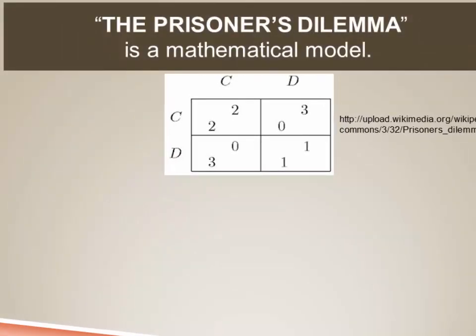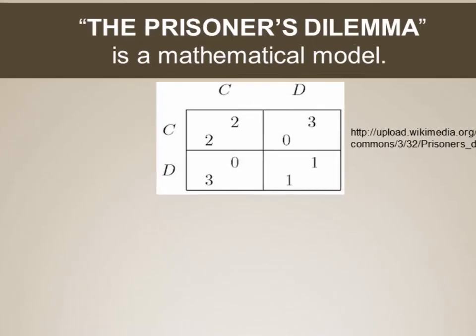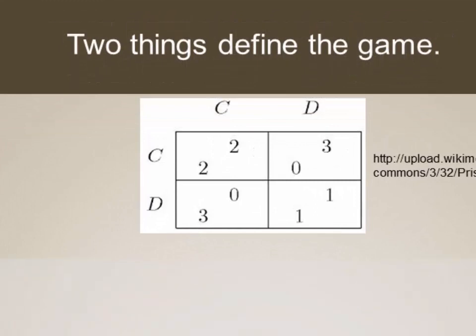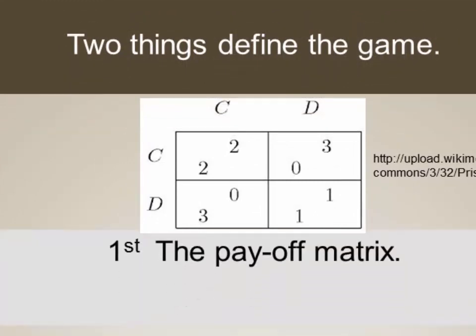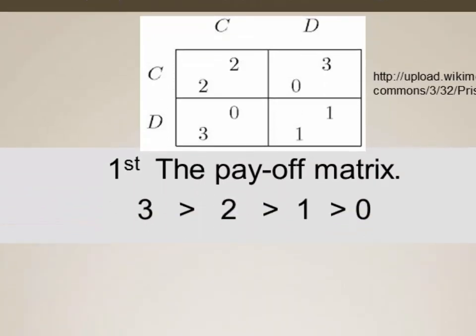When you look at the Prisoner's Dilemma as a mathematical model, at one level it's just a set of payoff matrices. Two things define the Prisoner's Dilemma, and the first is the payoff matrix. Looking at this distribution of numbers — 3, 2, 1, and 0 — these numbers are not randomly placed, but represent the payoffs to the choices made by the players.